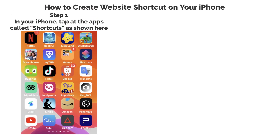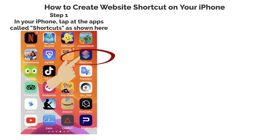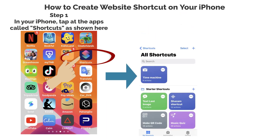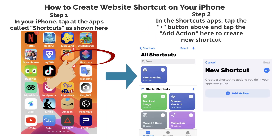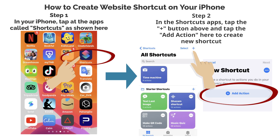Step 1: In your iPhone, tap the app called Shortcuts as shown here. Step 2: In the Shortcuts app, tap the plus button above and tap Add Action here to create a new shortcut.